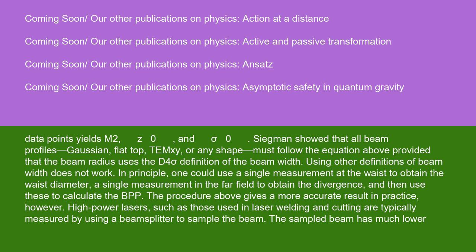Using other definitions of beam width does not work. In principle, one could use a single measurement at the waist to obtain the waist diameter, a single measurement in the far field to obtain the divergence, and then use these to calculate the BPP. The procedure above gives a more accurate result in practice, however.